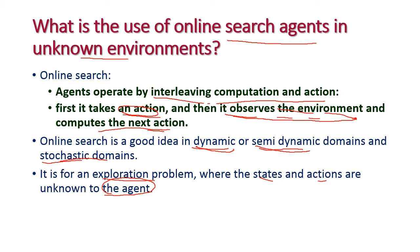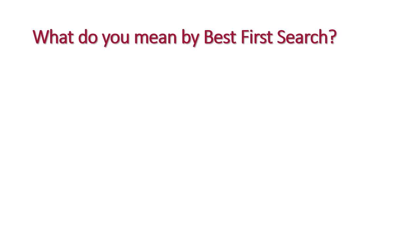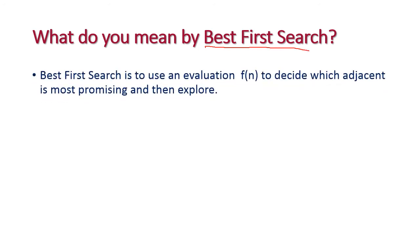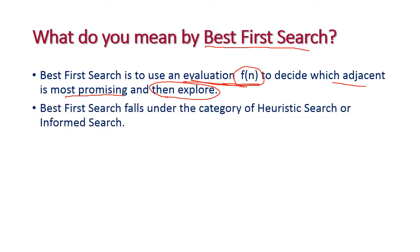The next question is: what do you mean by Best First Search? Best First Search uses an evaluation function f(n) to decide which adjacent node is most promising, and then that particular node gets explored. To identify the next node, Best First Search uses this evaluation function to decide which promising adjacent node is to be explored. This comes under the category of heuristic or informed searching technique.